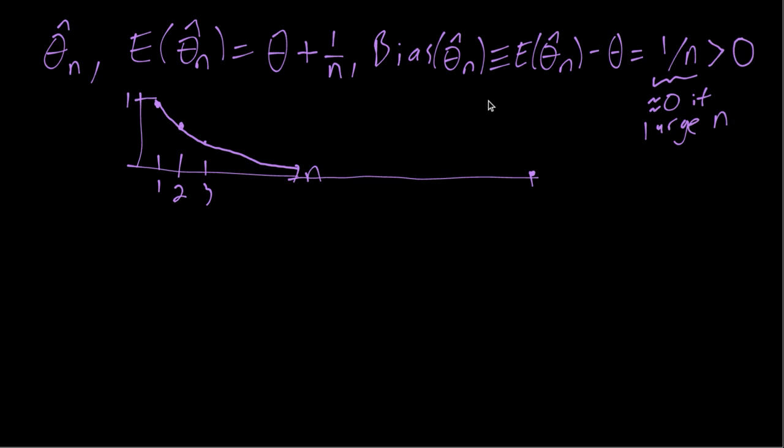Now this doesn't mean anything about what happens when n is small, right? We could have even replaced the 1 over n with 1,000 over n, and then if n is equal to 1, the bias would be 1,000. We can make it as big as we want when n is small. So that's just something to be careful about.